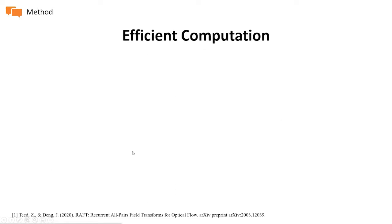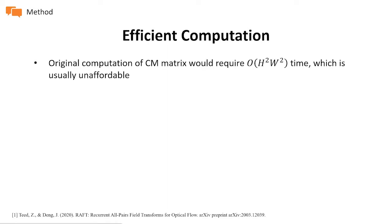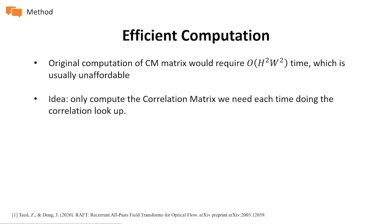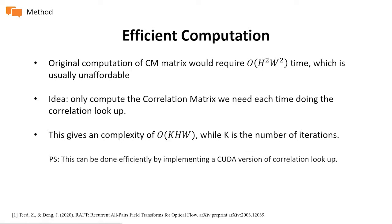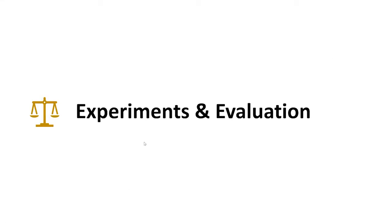One thing left to mention is the efficient computation of the correlation matrix. The original full correlation matrix computation would be quite computationally expensive because we are operating at relatively high resolution. A simple idea is to only compute the correlation values we need each time during the correlation lookup. This gives a complexity of O(K×H×W), where K is the number of iterations. In the RAFT implementation, this is done efficiently by implementing a CUDA operation for the correlation lookup.